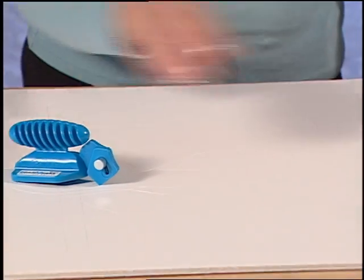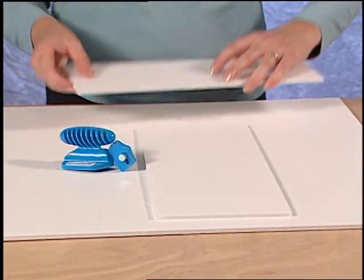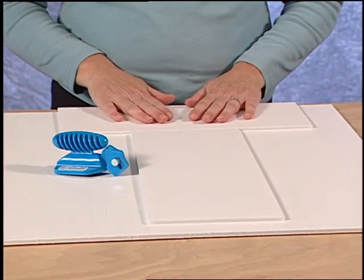When using the freestyle cutter to cut foam board from the outside edge in, adding a second piece of foam board at the bottom supports the tool for a smoother cut.